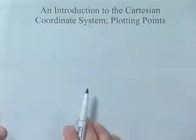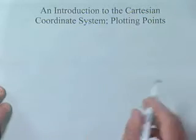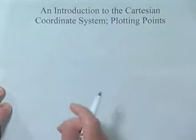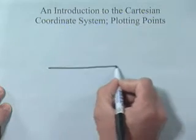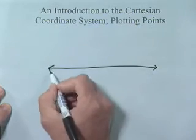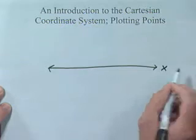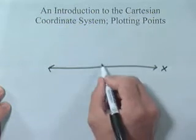I will talk about what's called the Cartesian coordinate system. What that is, is basically two number lines on top of each other. We have first of all a horizontal number line which we will call the x-axis.